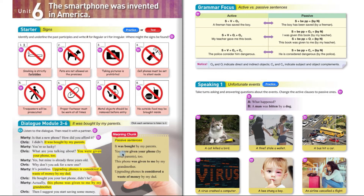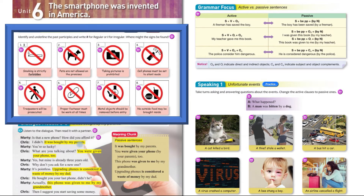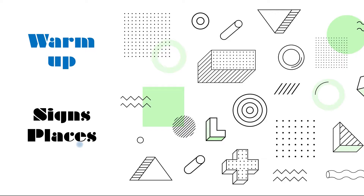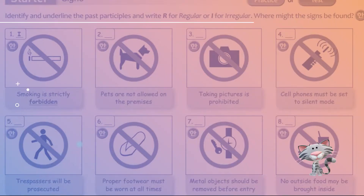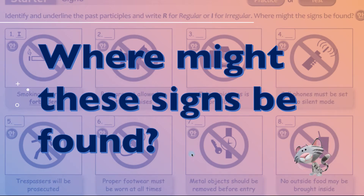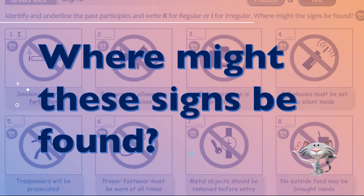Sorry about that. There are signs telling you not to do this. But what sort of places do they tell you to do that? We're going to talk about that now. First, we're going to look at the signs. Where might the signs be found that stop people? Signs and places - that's our warm-up. It's very important that you understand the starter because we'll be using the grammar, the vocabulary, and everything from this starter for the next 10 minutes or so at least.